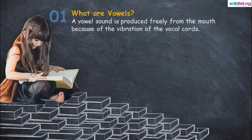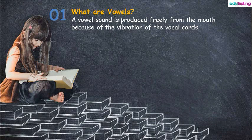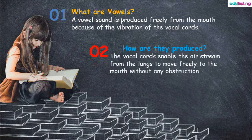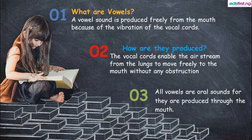What are vowels? A vowel sound is simply that sound produced freely from the mouth because of the vibration of the vocal cords. Your vocal cords are a fold of tissue located in your throat. When air passes through it, it vibrates and produces sound. The vocal cords enable the air stream — that is, the air from the lungs — to move freely to the mouth without any obstruction.